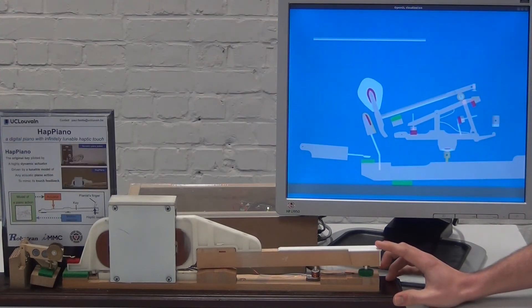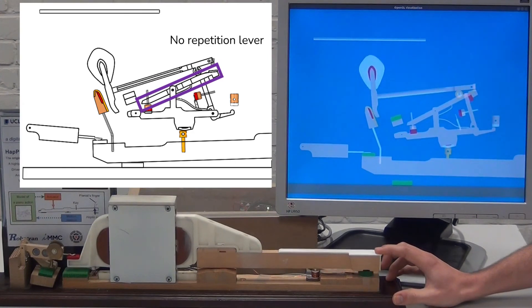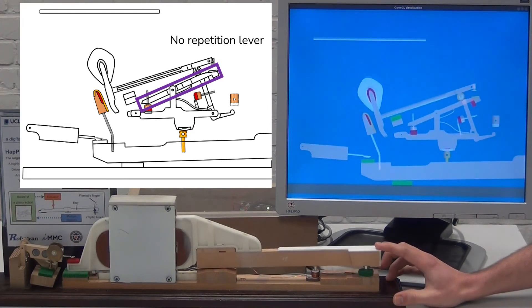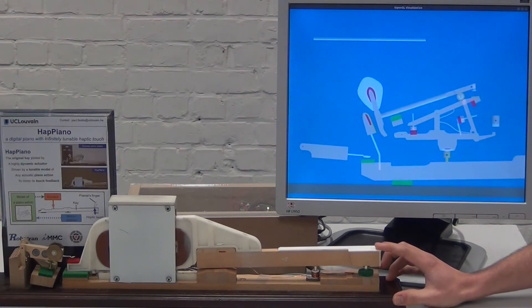And finally, if we remove the action of the lever, the repetition lever, we see that we have difficulties to repeat the note.